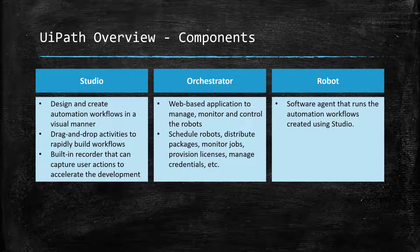The Orchestrator can be accessed via a web browser. It has several functionalities such as scheduling the robots, distributing the workflows and packages to the robots centrally, monitoring robots and jobs, provisioning the licenses for robots and studios, and managing the application credentials to be used by the robots, and so on.